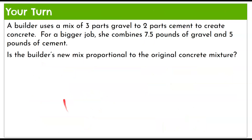Now it's your turn. A builder uses a mix of three parts gravel to two parts cement to create concrete. For a bigger job, they combine seven and a half pounds of gravel and five pounds of cement. Is the builder's new mix proportional to the original concrete mixture? Pause the video and use complex fraction ratios to mathematically determine if it's a proportional relationship.